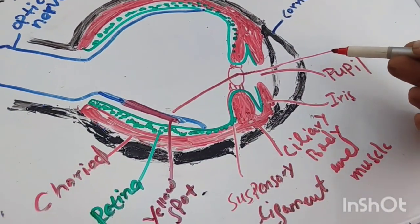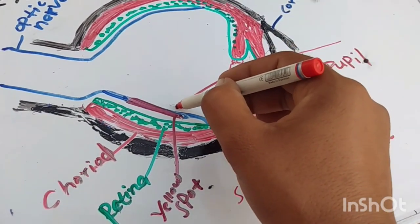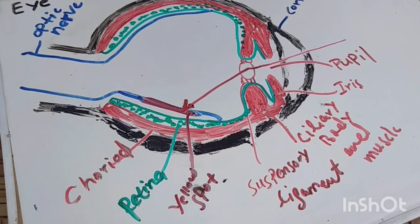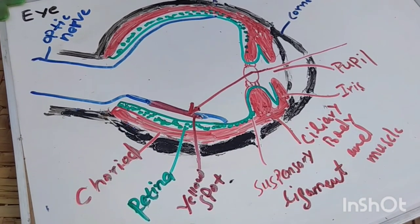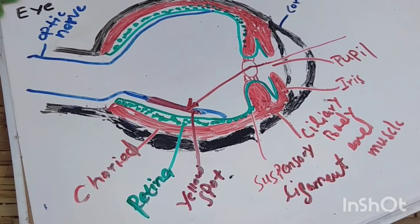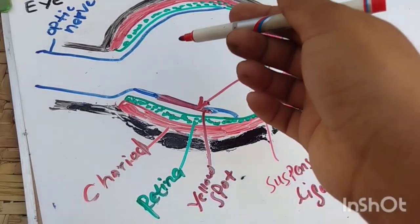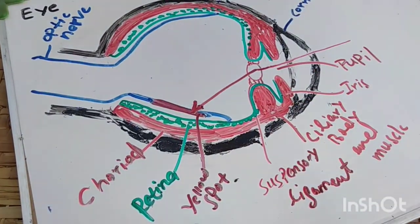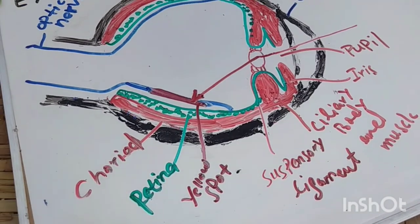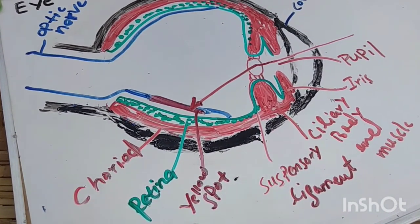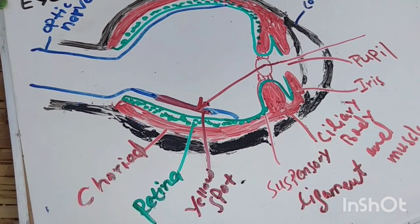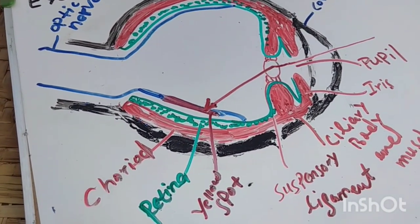Light is refracted to the yellow spot. The yellow spot consists of high concentrations of rod and cone cells, which are photosensitive cells. These cells send messages to the neural layer, and the neural layer converts this light into electric impulses. These electric impulses travel to the brain through the optic nerve, and the brain forms an image.